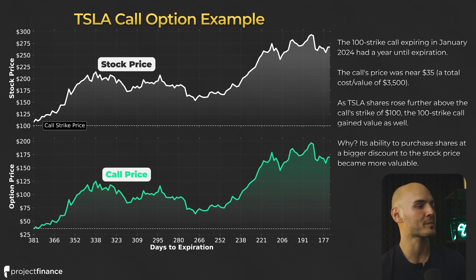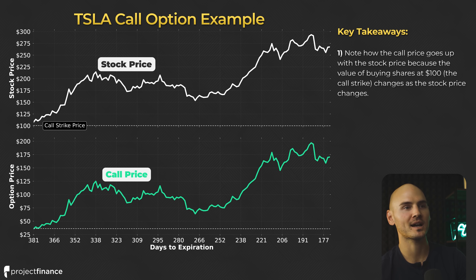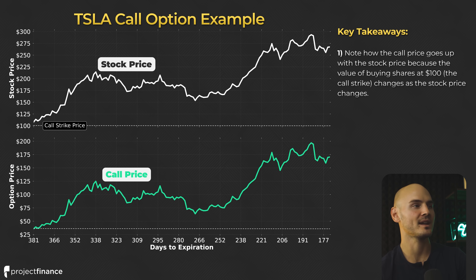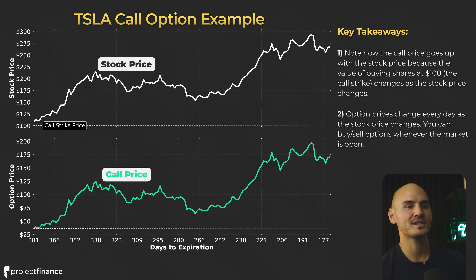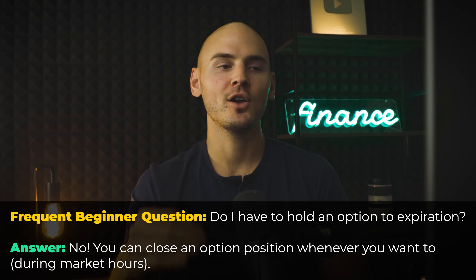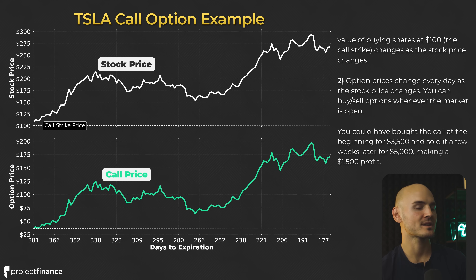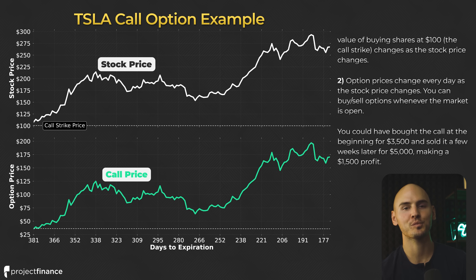Key takeaways: first, note how the call price goes up with the stock price, because the value of buying shares at $100 changes as the stock price changes. Second, option prices change every day as the stock price changes, which is important because you can buy or sell options whenever the market is open. You can enter an option position and close it within the same day, or hold it for weeks as long as the option hasn't expired. For example, you could have purchased this call at the beginning of the period for $3,500 and sold it a few weeks later for $5,000, securing a $1,500 profit. On the other hand, if you chased the move up and purchased the call for $12,500, then sold it down at $7,500, you would lose $5,000 on that trade.